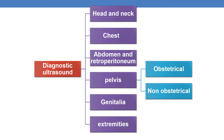Coming to the various categories in ultrasound, diagnostic ultrasound is categorized into head and neck, chest, abdomen and retroperitoneum, and pelvis. Pelvis is again categorized into obstetrical and non-obstetrical, genitalia, and extremities. In the current session, we will be focusing in detail on the diagnostic ultrasound of abdomen and retroperitoneum.